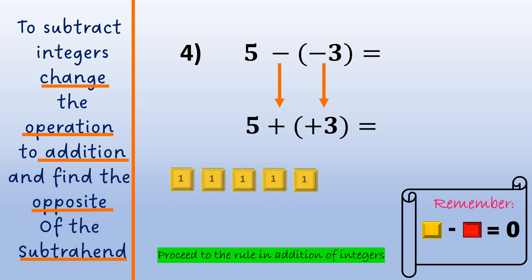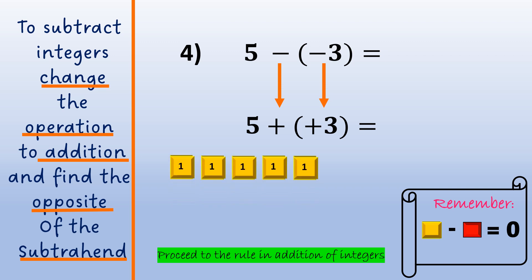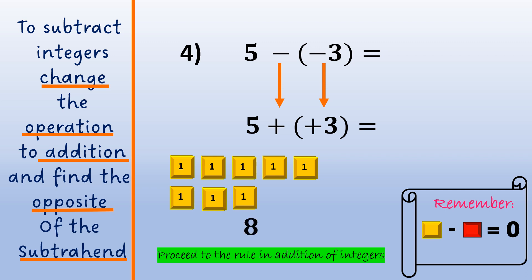To represent this using algebra tiles, we have 5 yellow tiles and another 3 yellow tiles to represent positive 3. We will just count them since they are the same yellow tiles. So there are 8 yellow tiles. Therefore, 5 plus positive 3 is equal to 8, and 5 minus negative 3 is equal to 8.